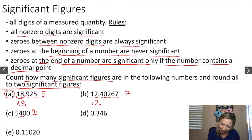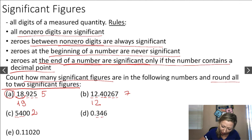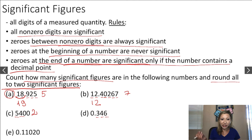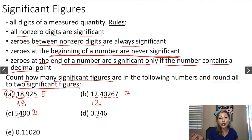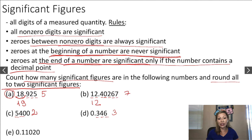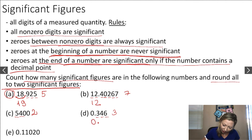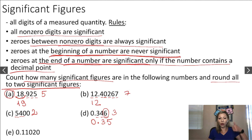Let's look at example D. Counting non-zero digits: 1, 2, 3. And then we have a zero at the beginning of the number. The rule says zeros at the beginning of a number are never significant. So in this case, we have three significant figures. To round to two significant figures, since the third significant figure is larger than 5, we round up to 0.35.